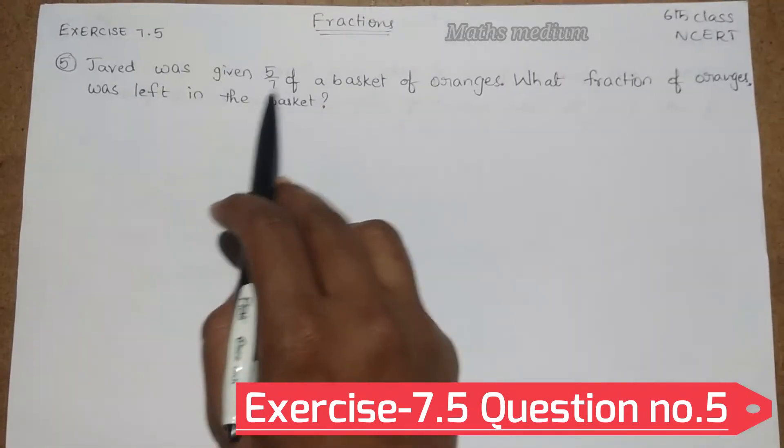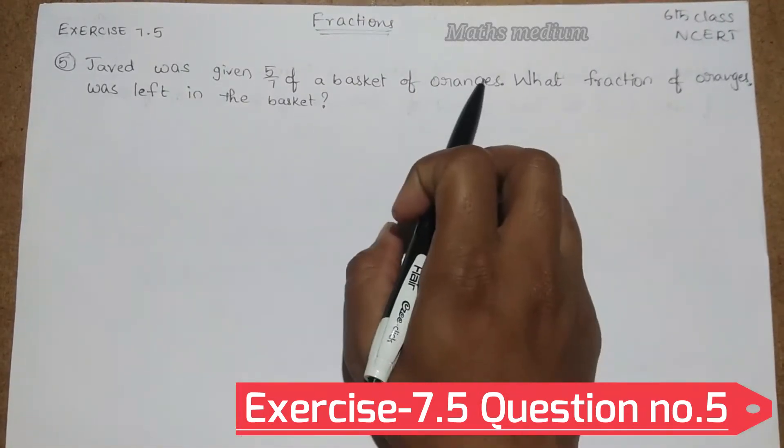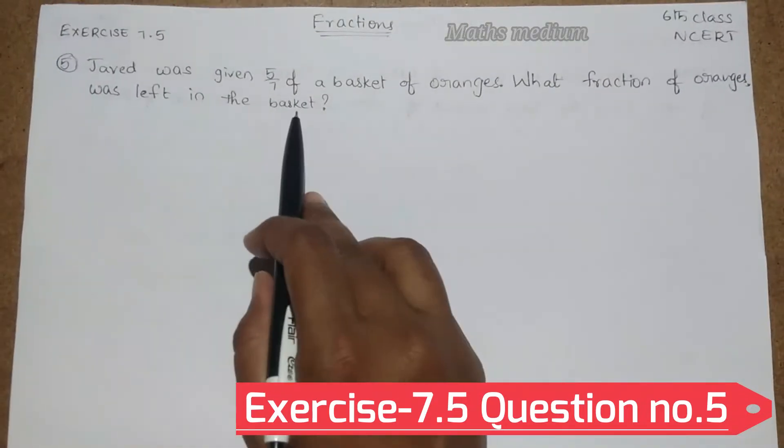Javed was given 5 by 7 of a basket of oranges. What fraction of oranges was left in the basket?